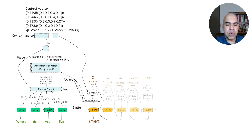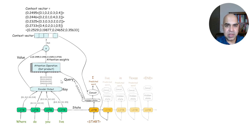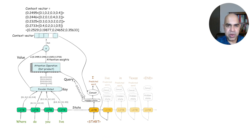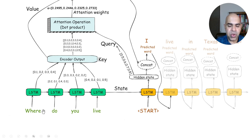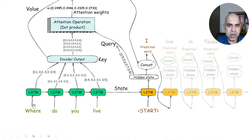Let me explain how the entire calculation occurs for attention computation. The hidden state coming out of the LSTM for the first token — in this case 'start' — is called the query. The query is the hidden state output of an LSTM for a given token. Since we have four words in the encoder — 'where do you live' — we have four hidden states. For the word 'where', this hidden state was generated. This one represents both the hidden state and the cell state. Here we retrieve: the hidden state for 'where', the hidden state for 'do', the hidden state for 'you', and the hidden state for 'live'.